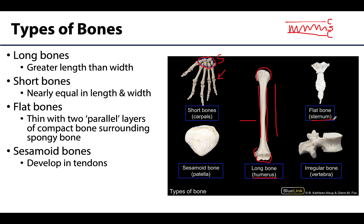There are two named types of sesamoid bones: the patella, which you can see here — your kneecap — as well as the pisiform bone in the wrist region, which is one of your carpal bones. There are other common but typically unnamed sesamoid bones in the big toe and thumb region, which are formed in tendons there.